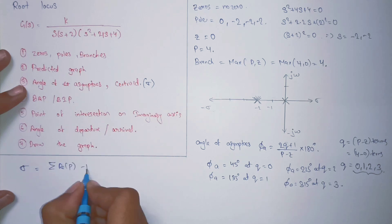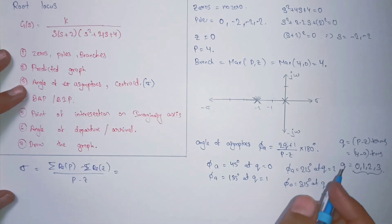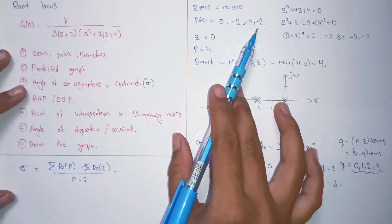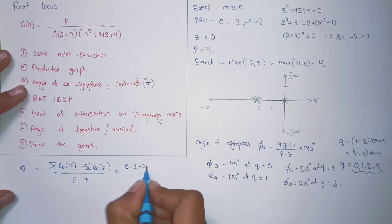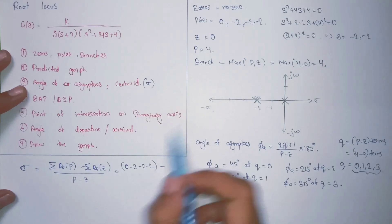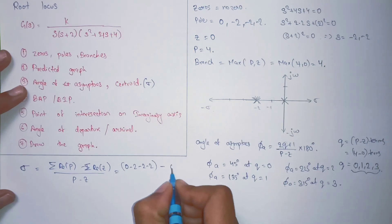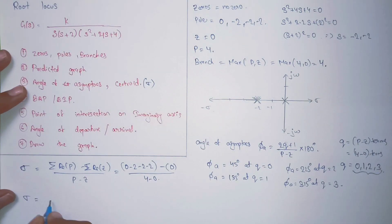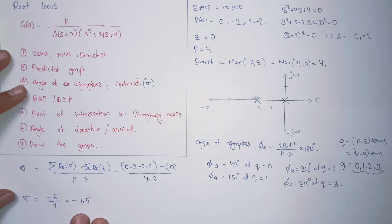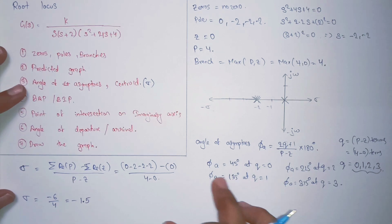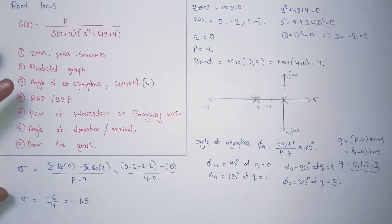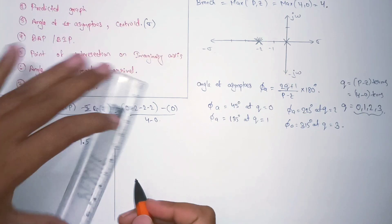Now we will calculate the centroid, denoted sigma. The centroid equals the sum of real values of all poles minus the sum of real values of all zeros, divided by (P − Z). All poles are real: zero, minus two, minus two, and minus two. There are no zeros, so we write zero. So sigma = (0 − 2 − 2 − 2 − 0) / (4 − 0) = −6/4 = −1.5. The centroid lies at minus 1.5 and the angle of asymptotes are 45°, 135°, 225°, and 315°.